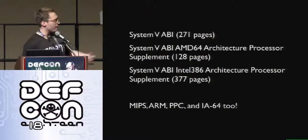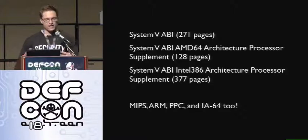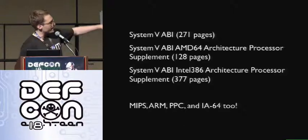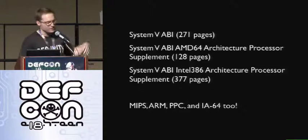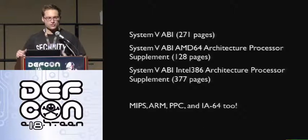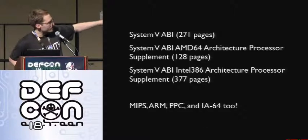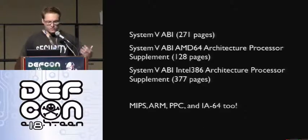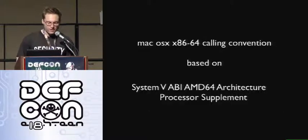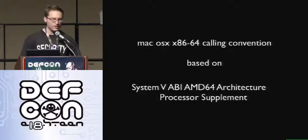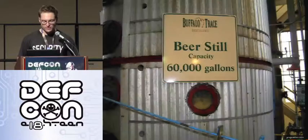You have the big System V ABI, which is about 200 pages, and as you read it, it has sections where it says open up your architecture-specific ABI and read that one. The AMD64 ABI has a page where it says everything in here is true but you also need to read everything in the IA-32 ABI. So if you actually want to understand what's going on, you need to read like 700 pages. Lucky for us, the x86-64 calling convention on OSX is based on the System V AMD64 ABI, so there's some overlap and we actually get saved a little bit.